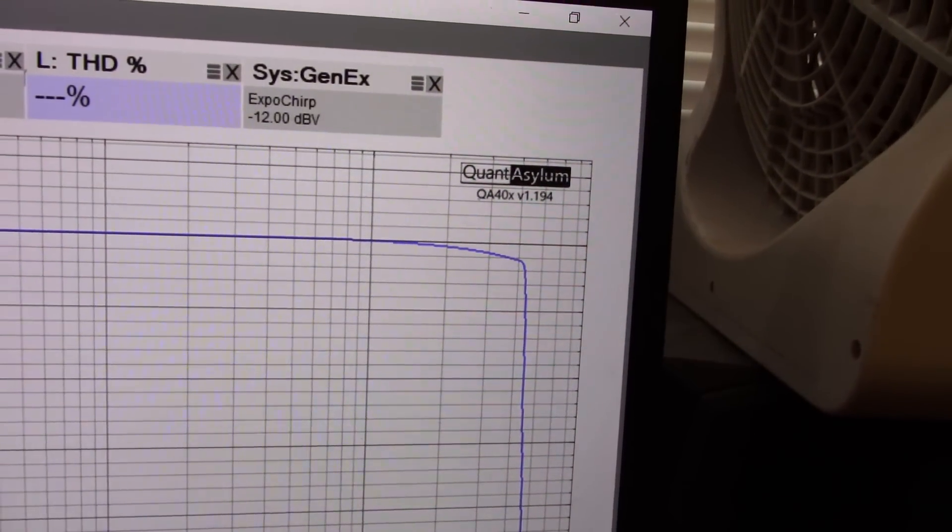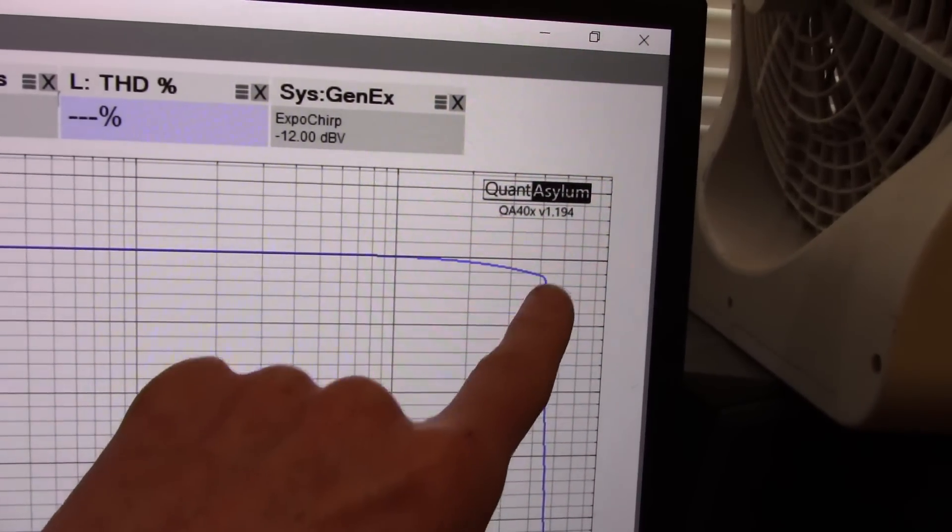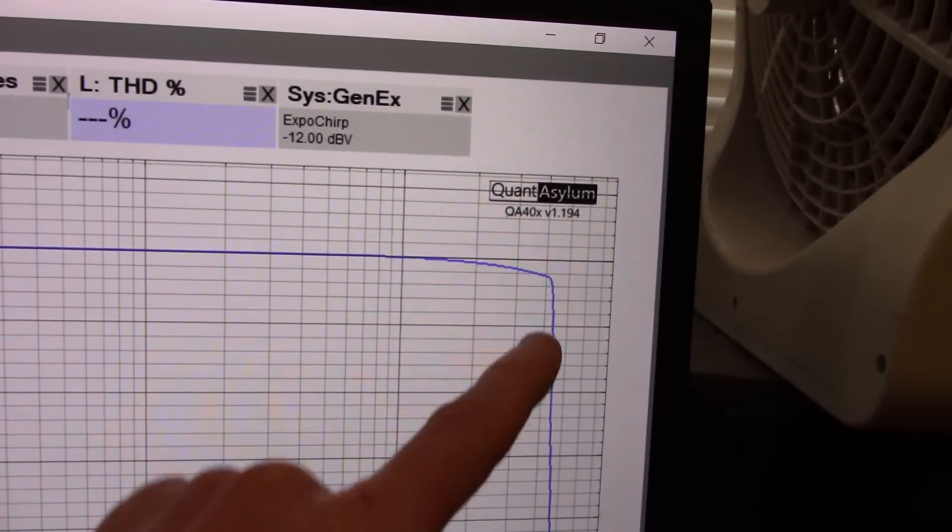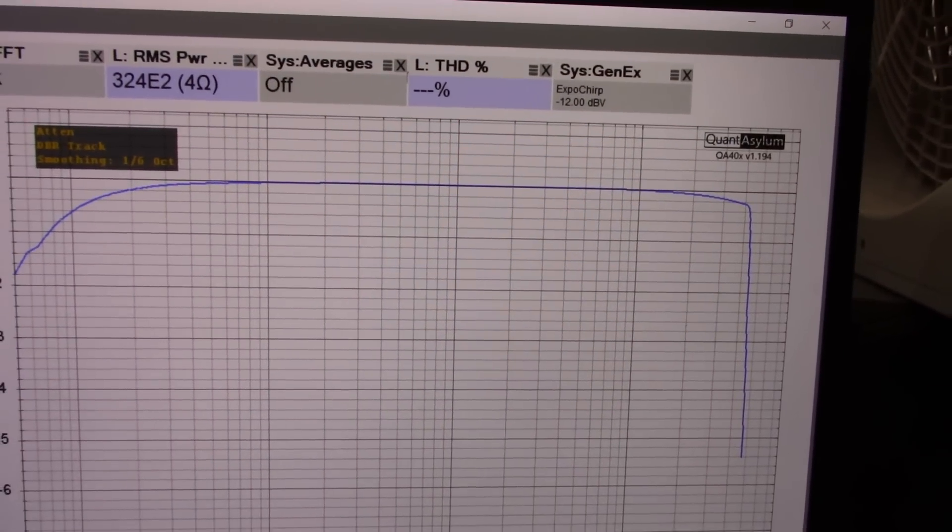The reason it falls off is the way I have the QuantAsylum set up. It's just not putting a signal out at that point so it doesn't really see anything and it just falls. So yeah, I mean this is audiophile flat.